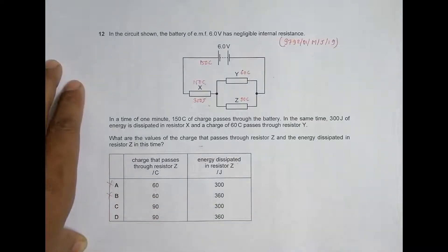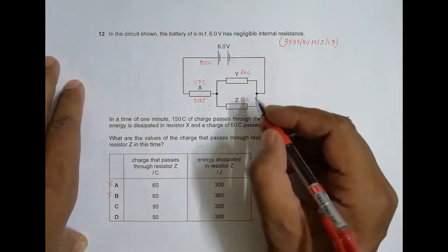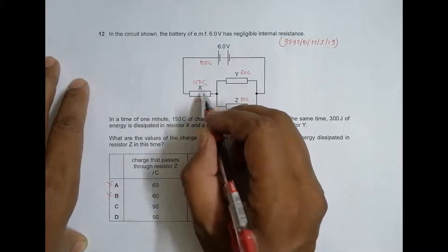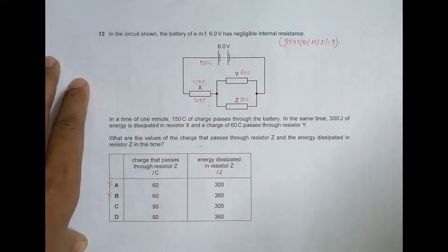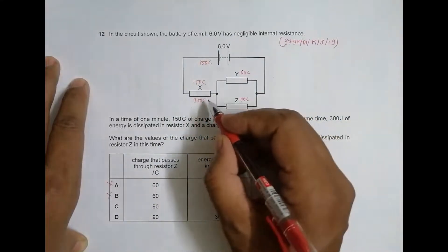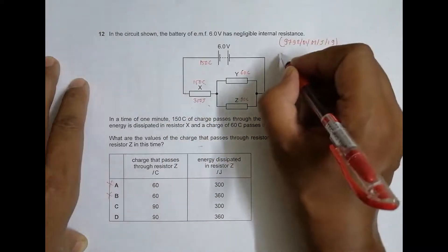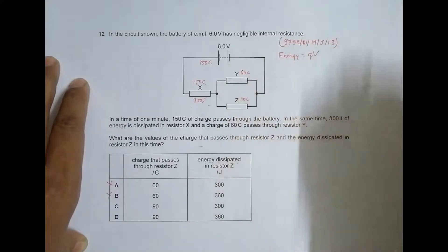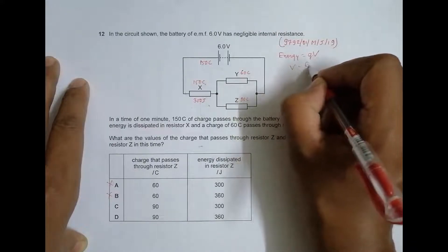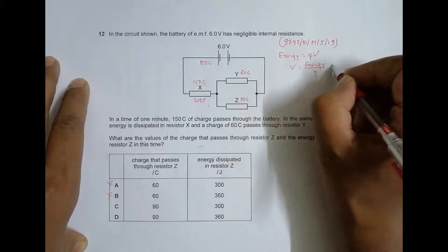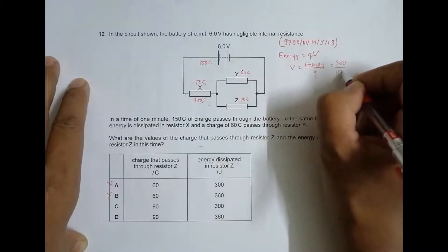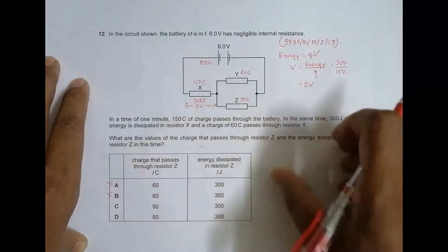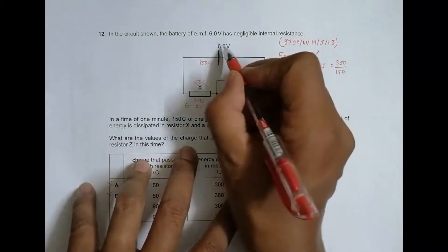Now we need to find the energy dissipated in Z. For resistor X, we use energy equals Q times V, so V equals energy divided by Q. That gives us 300 joules divided by 150 mC, which equals 2 volts. So the potential difference across resistor X is 2 volts.